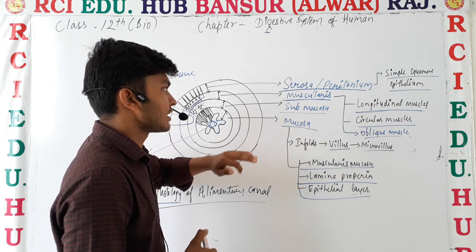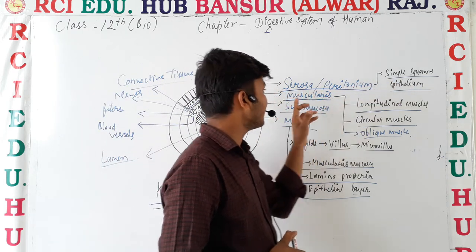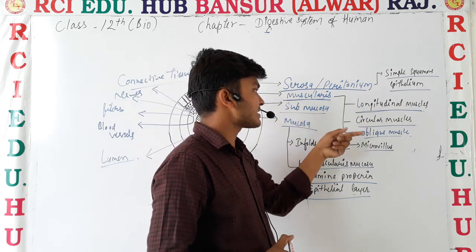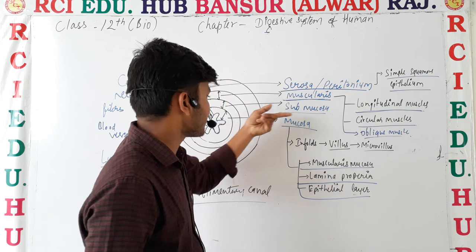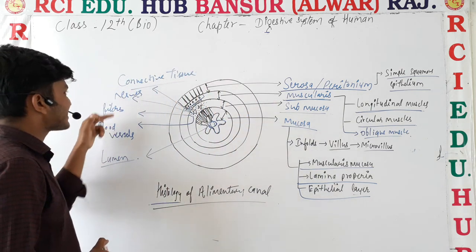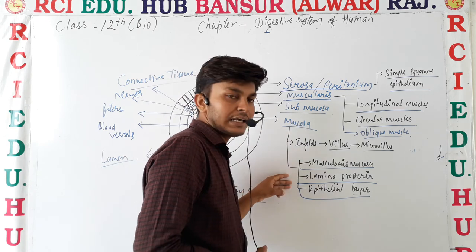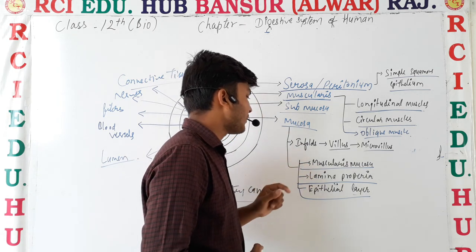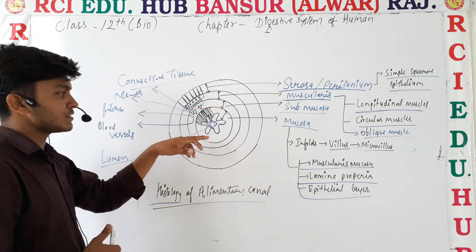To summarize: the first layer is serosa, the second is muscularis, the third is submucosa, and the fourth is mucosa. Serosa consists of simple squamous epithelium. Muscularis consists of longitudinal muscles and circular muscles. Submucosa consists of nerve fibers, blood vessels, and connective tissues. Mucosa consists of three layers: muscularis mucosa, lamina propria, and the epithelial layer.